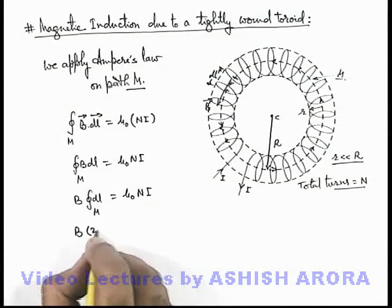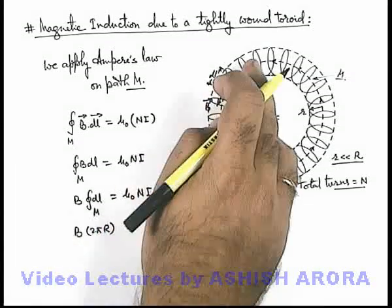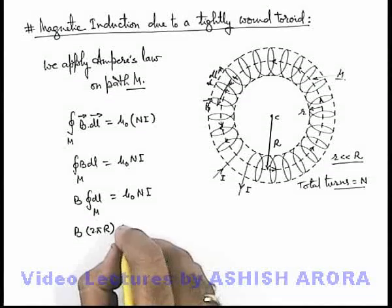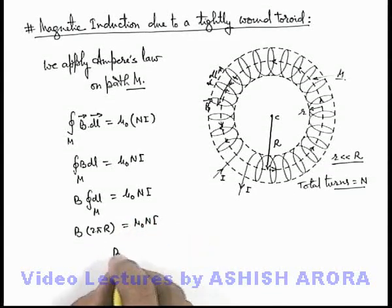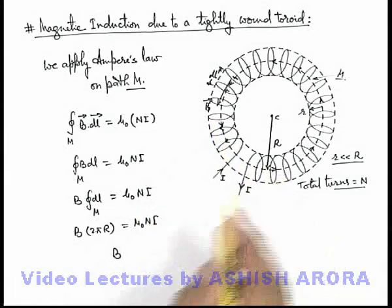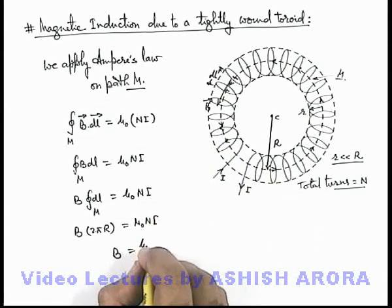And this can be written as 2πr, because the total length of the path is 2πr, which equals μ₀NI. So magnetic induction at every interior point can be written as μ₀NI/2πr.